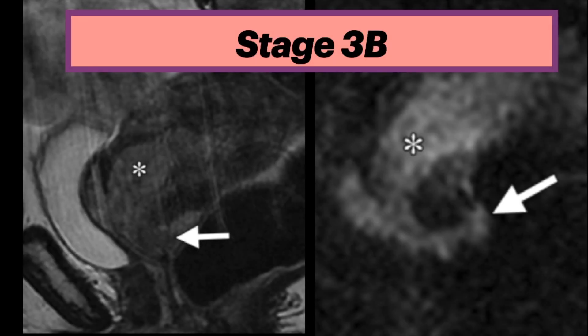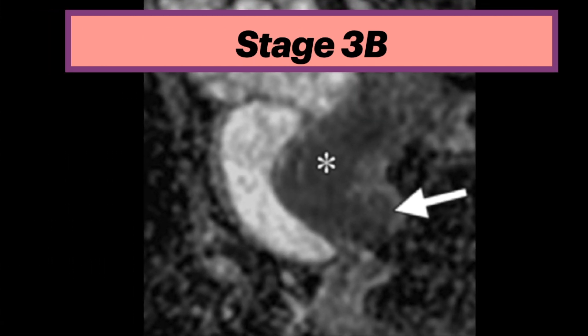This is an example of stage 3b endometrial cancer. The sagittal T2 shows a large isointense endometrial tumor extending into the upper aspect of the vagina, shown by the arrow. The sagittal diffusion-weighted image shows the hyperintense tumor invading the upper vagina, and the corresponding ADC map shows the tumor is hypointense due to restricted diffusion. This patient had renal failure preventing IV contrast use; diffusion-weighted imaging was adequate for disease staging.